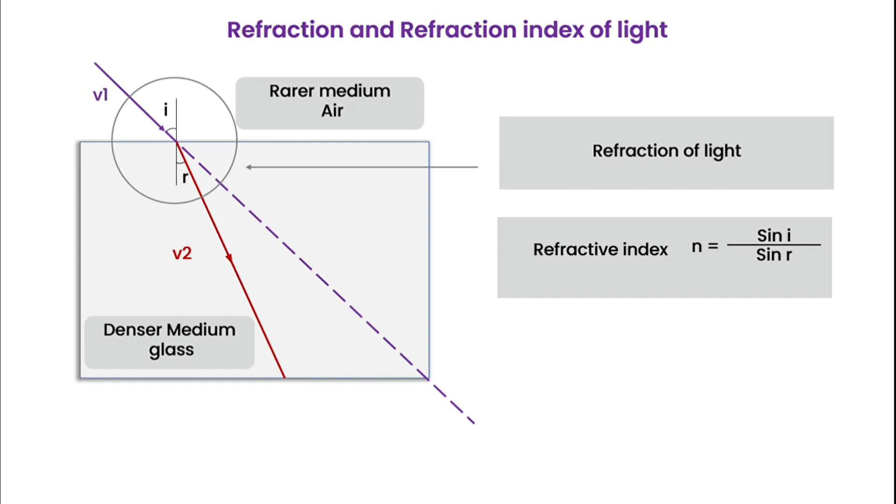Refractive index also depends on the velocity of light in the medium. But how do this refraction of light and changing refractive index make the stars twinkle?